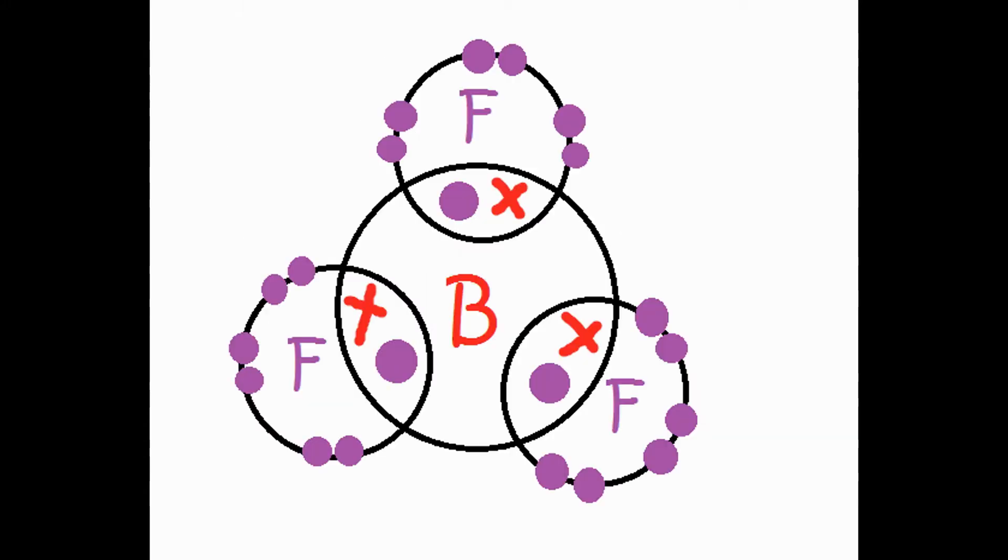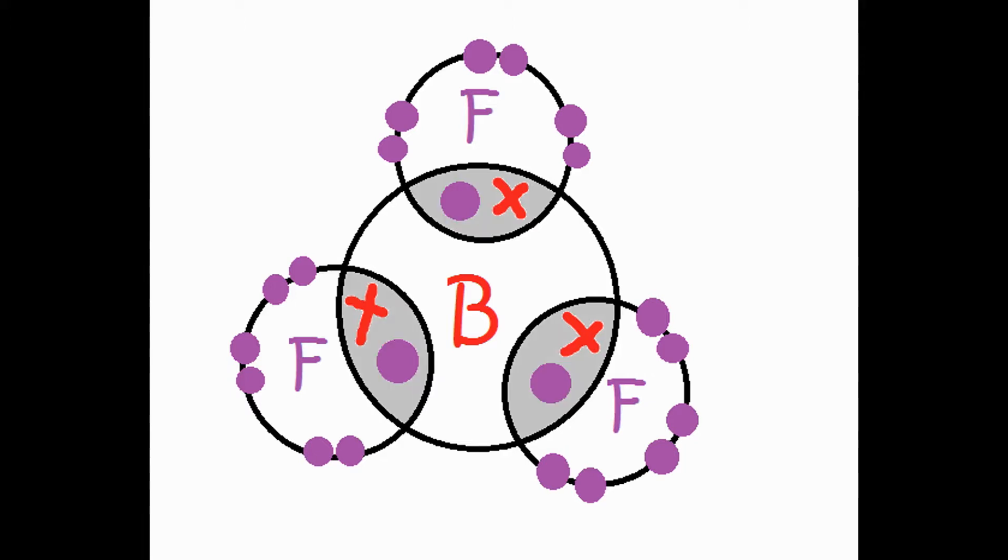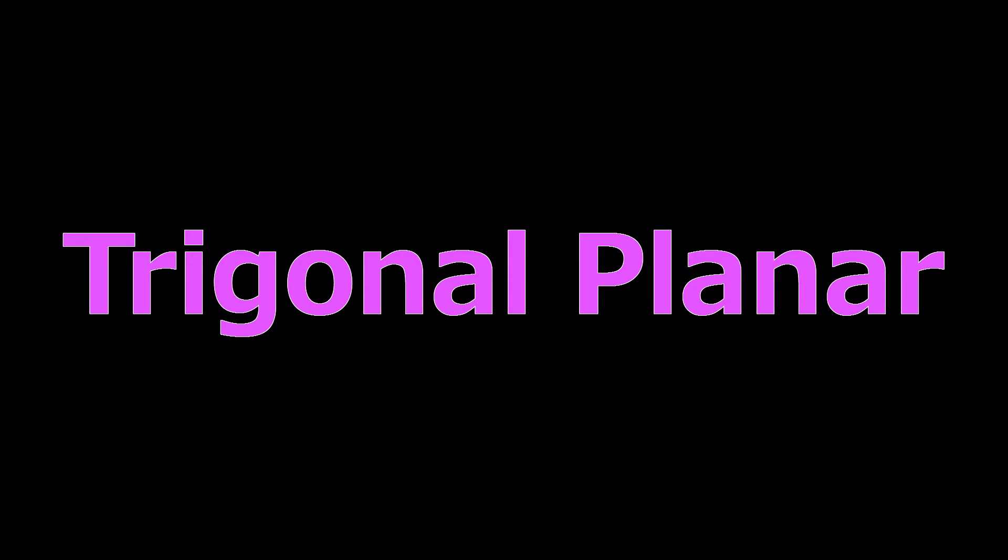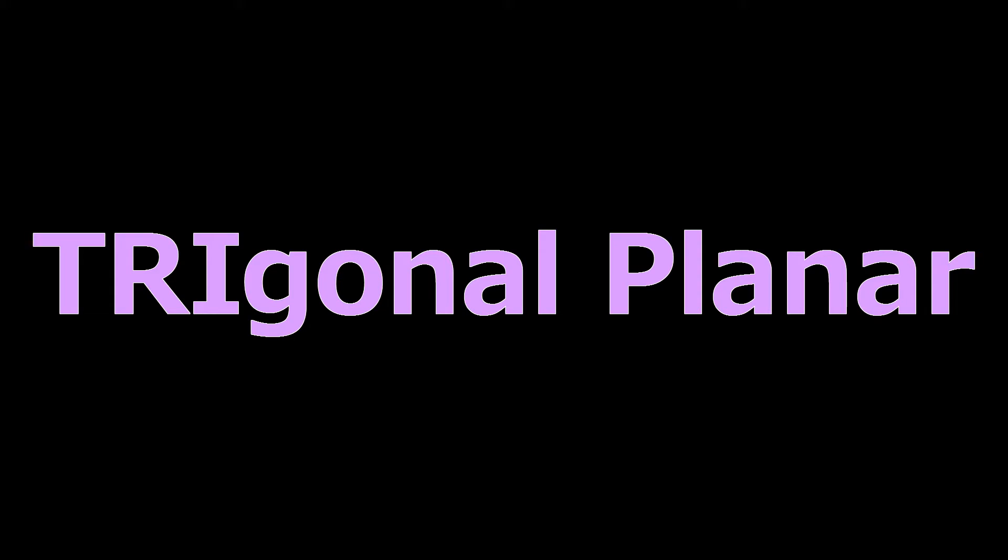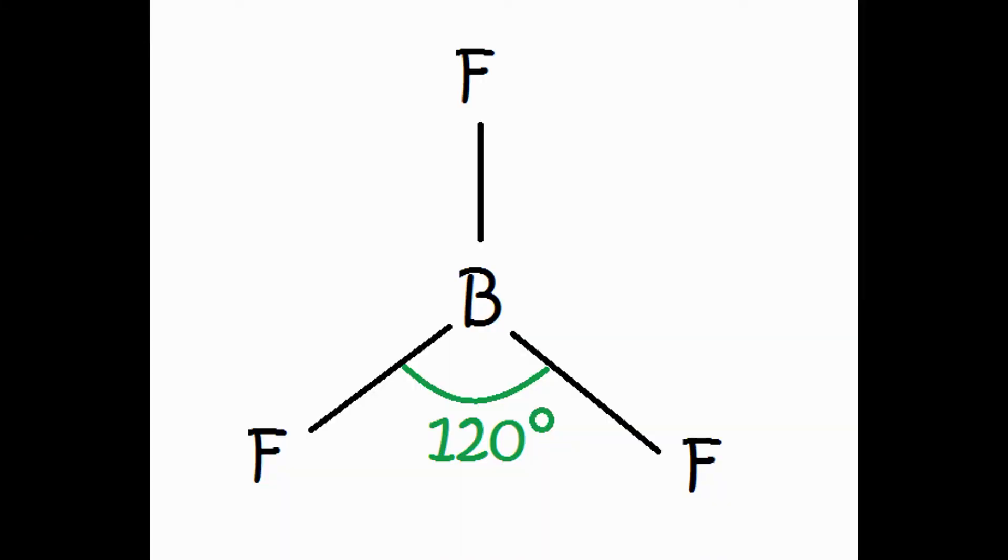So the first molecule we're going to look at is boron trifluoride, which is an example of a molecule that has three bonding pairs of electrons and no lone pairs. The shape that molecules like this form is called trigonal planar, which is kind of easy to remember because it's just, you know, tri because it has three bonding pairs. This is how you draw the molecule and the bonding angle is 120 degrees, which again kind of easy to remember because it's just 360 divided by three.